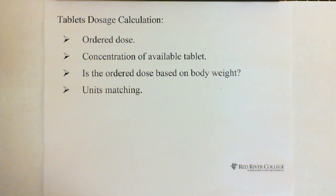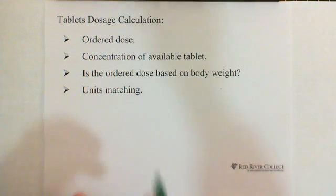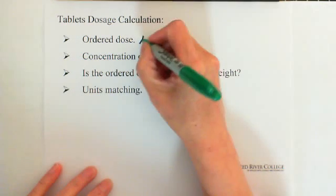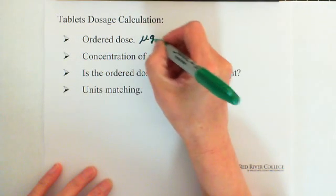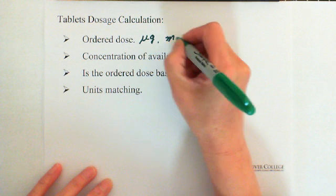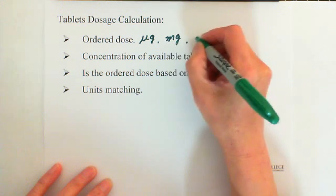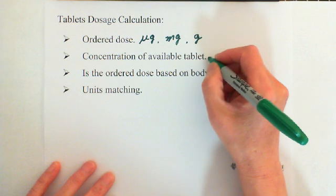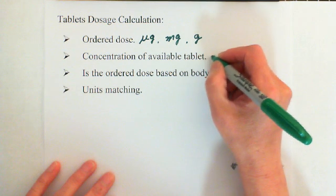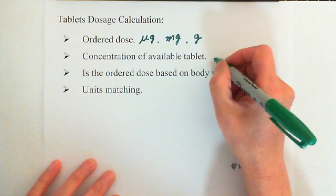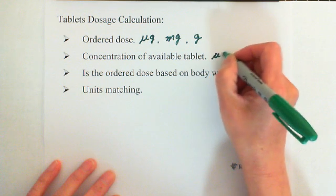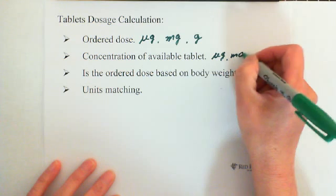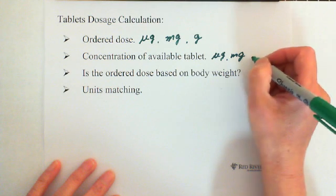Once we have these three points clear, the first important thing to start doing calculation is unit matching. When you read the question, the ordered dose may be in micrograms or milligrams, and for the available tablets, each tablet's concentration may also be in micrograms or milligrams.